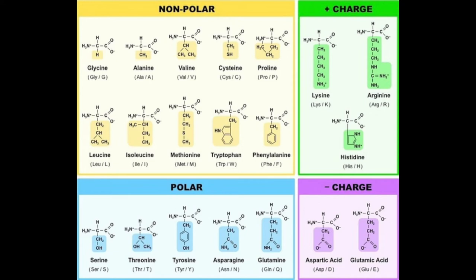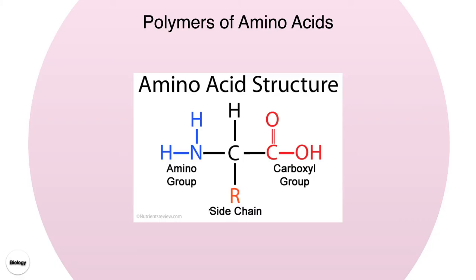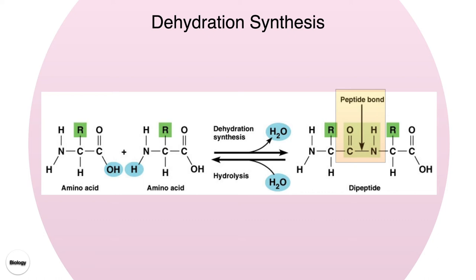There are 20 different R groups, which means there are 20 different amino acids. Since proteins are polymers of amino acids, we put them together through the process called dehydration synthesis — also called a condensation reaction — because you are losing a molecule of water. It's pulled out of the two molecules to get them to stick together. Looking at the first amino acid bonding to the second, at the carboxyl end we lose an OH group.